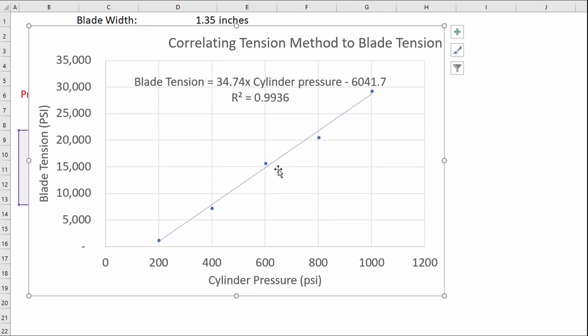And then I created a linear fit that shows a formula relationship between my method of tensioning and blade psi which that formula is given here so I can put that in my calculator and whatever cylinder pressure I happen to have it should correlate very well with my blade tension.